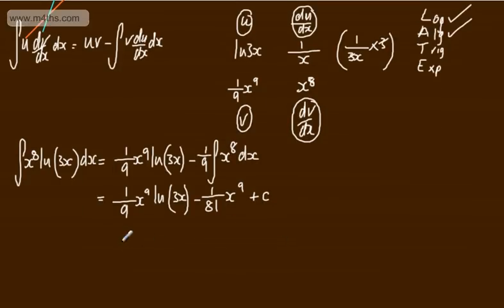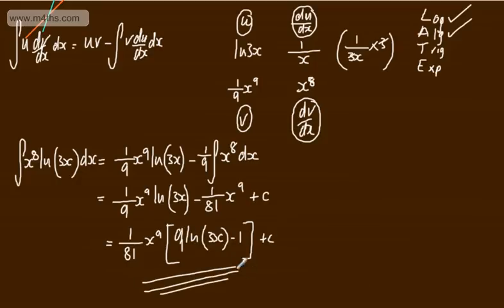I suppose if we wanted, we can factor this. We're not asked for it in its simplest form. We could write it as 1 over 81 x to the power of 9, and then we would have now 9 times the natural log of 3x, and then we'd have minus 1 plus a constant. We're not asked to give it in any particular form or show it, but that's one way that you could write it. This, though, would be perfectly fine.